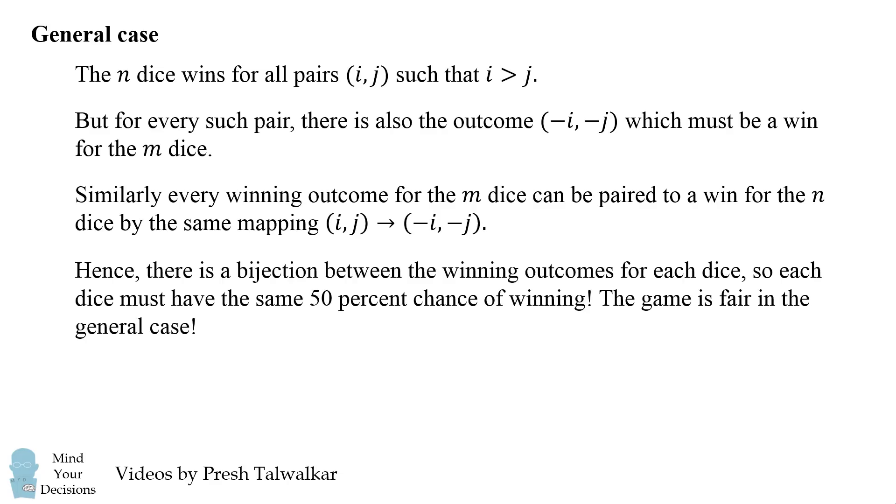Hence, there is a bijection between the winning outcomes for each dice, so each dice must have the same 50% chance of winning. The game is fair in the general case.